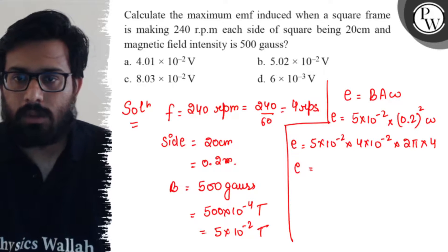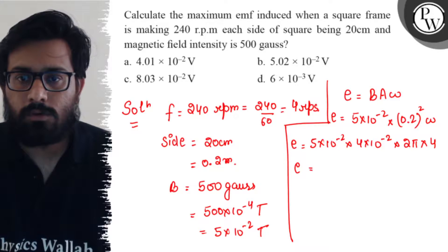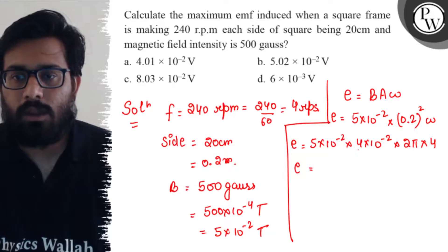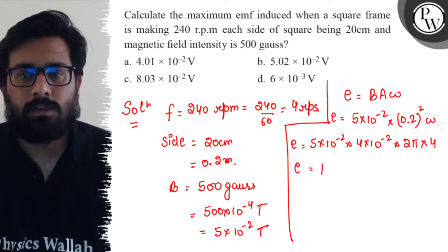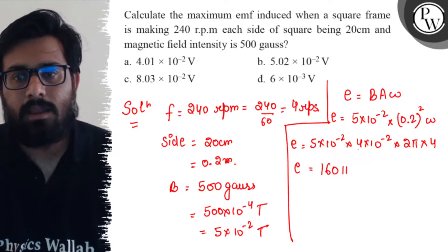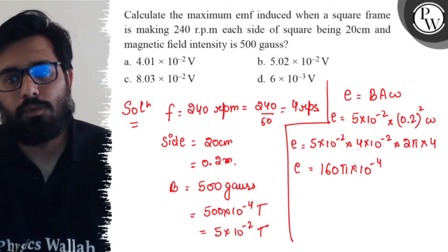Solving it further, 5 times 4 is 20, 2 times 20 is 40, 4 times 40 is 160. So 160π × 10^-4 volt.